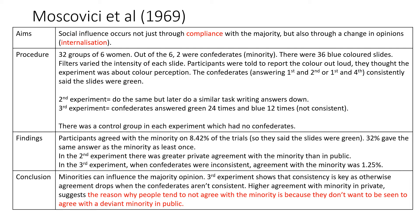In the second experiment, they did the same as the first, but later participants also wrote their answers down. In the third experiment, confederates answered green 24 times and blue 12 times - so they were not consistent. There was a control group with no confederates in each experiment. The findings: participants agreed with the minority on 8.42% of trials, and 32% gave the same answer as the minority at least once. In the second experiment, there was greater private agreement with the minority than in public - when writing answers down, participants agreed much more with the minority. In the third experiment, there was very small agreement of only 1.25%, when the confederates were inconsistent.